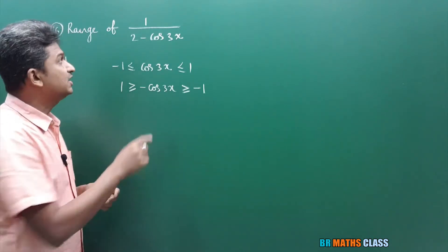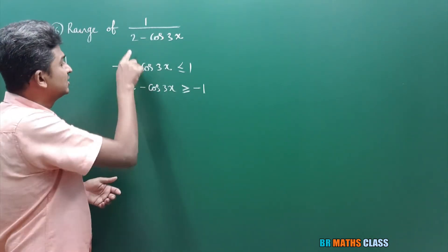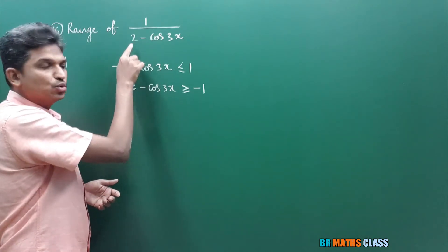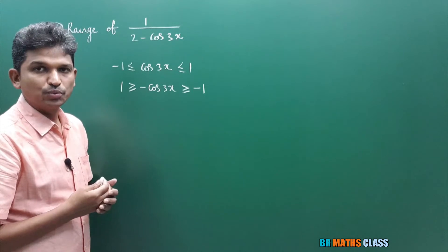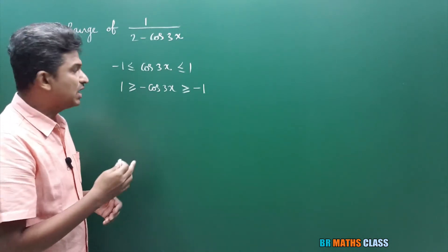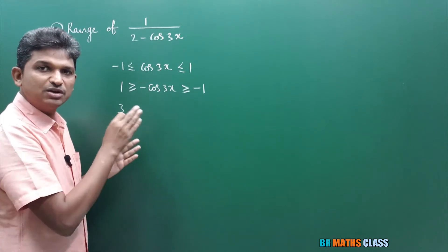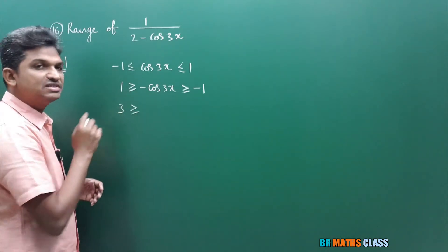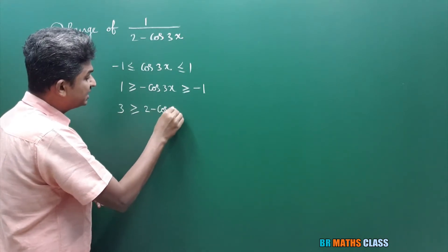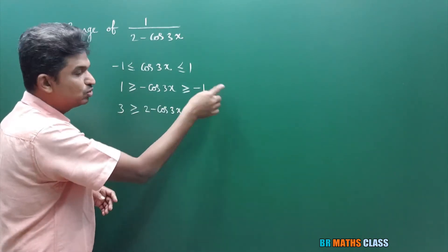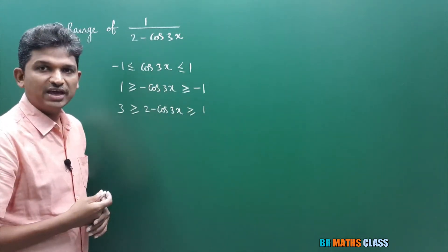I am trying to get 2 minus cos3x. Minus cos3x is there; I need 2. To get 2 here, I will add 2 to this complete inequality. 1 plus 2 is 3. When we add a positive real number, the inequality remains the same. 3 is greater than or equal to 2 minus cos3x, greater than or equal to minus 1 plus 2 which is 1. This can be written as: 1 ≤ 2 minus cos3x ≤ 3.